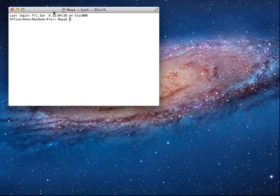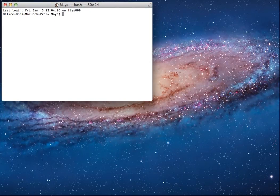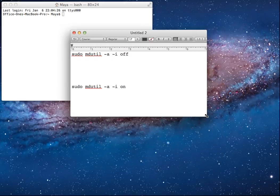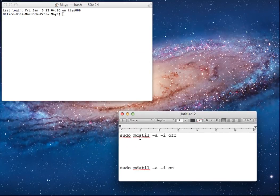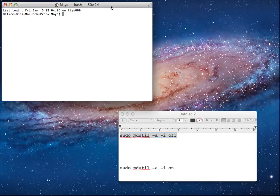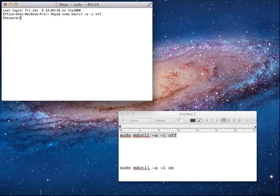Alright. And so we'll put the terminal over here, so that's running there, and then I also want to show you this is the commands that you want to use. This command line here turns indexing off, so I'm going to copy this. It's S-U-D-O space M-D-U-T-I-L space hyphen lowercase a, excuse me, space hyphen I space O-F-F. Alright, so we come over here to the command window, and I'm going to paste that in. I'm going to hit return.